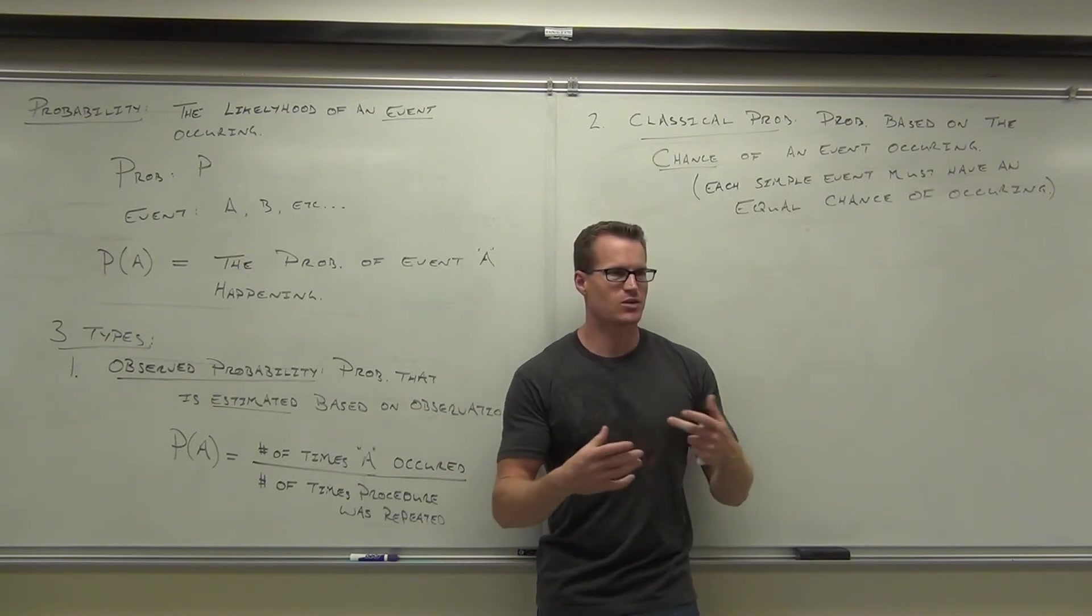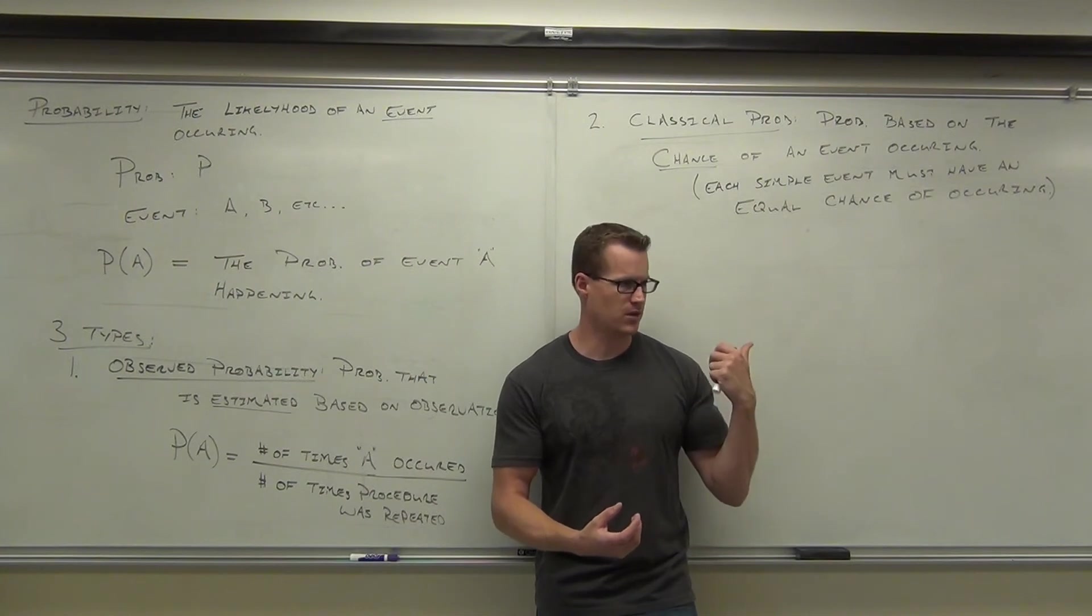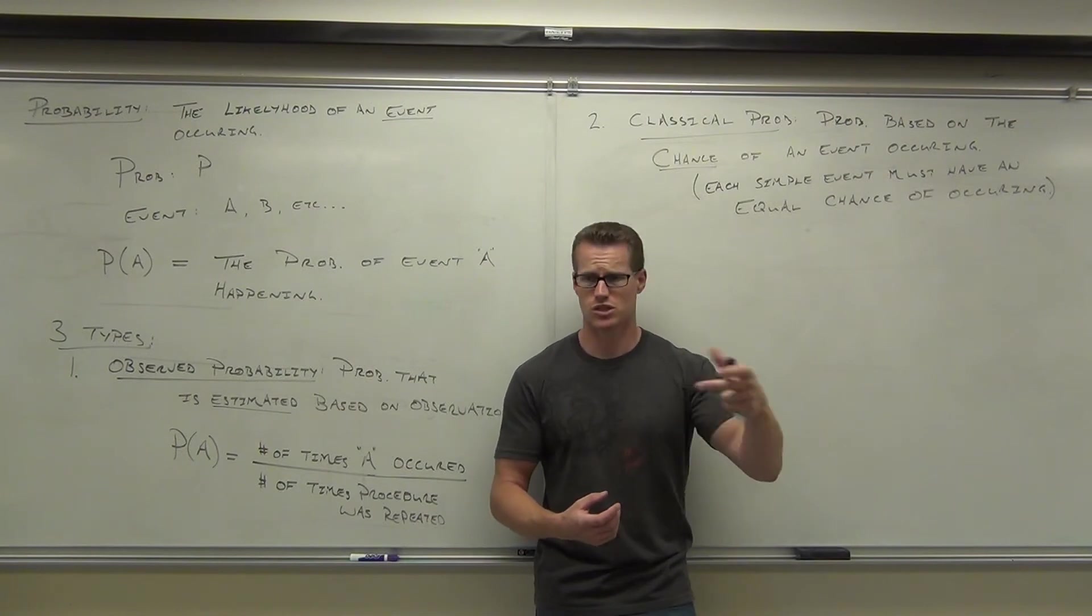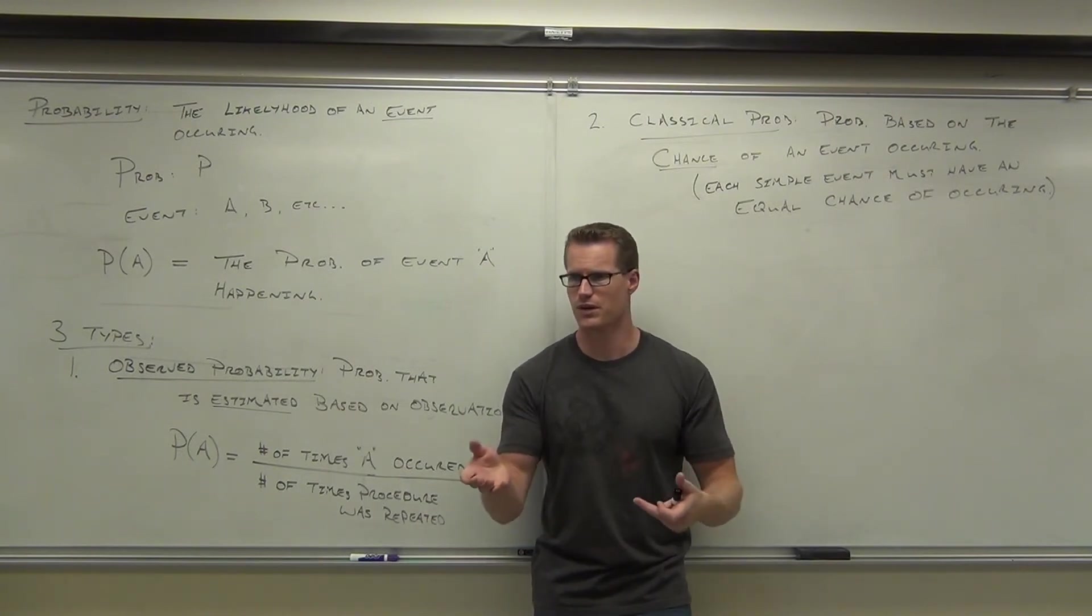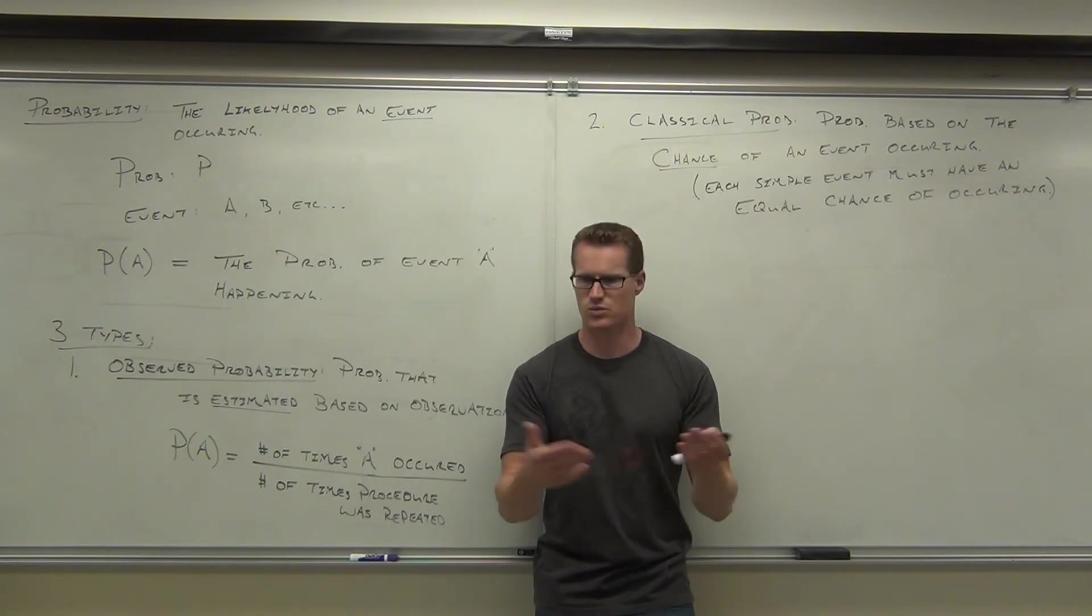The simple event must have an equal chance of occurring means that if I give you a weighted die and I say, what's probably the roll of 2? You can't say one-sixth anymore, because you don't know what the weight is. So in order for you to do the theory approach, something that has a chance of occurring, you have to have an equal chance there, right?